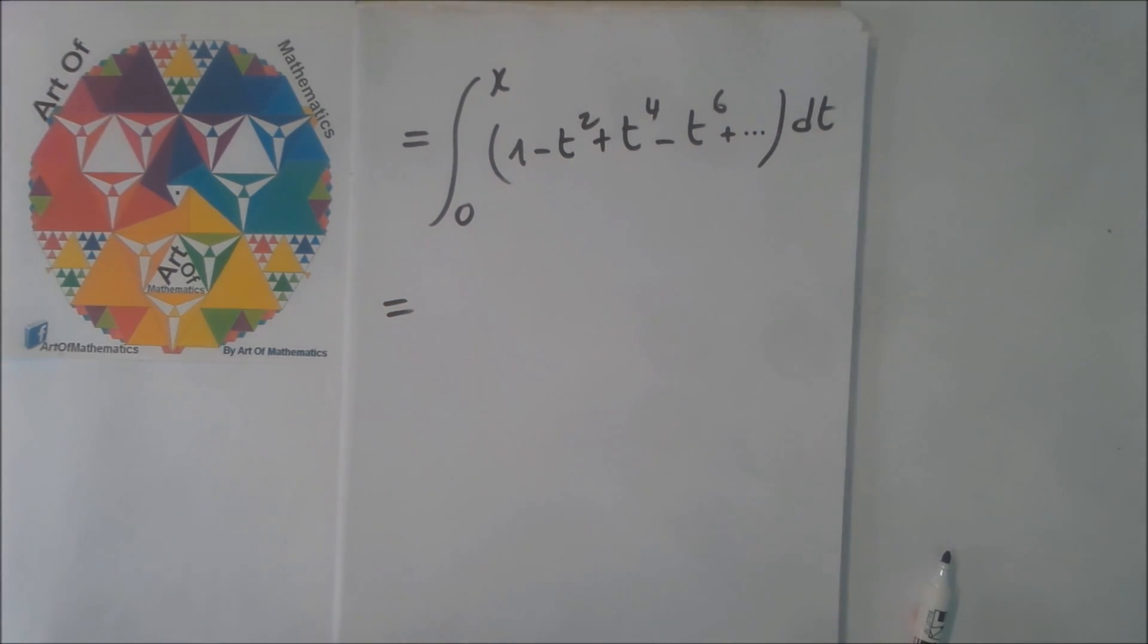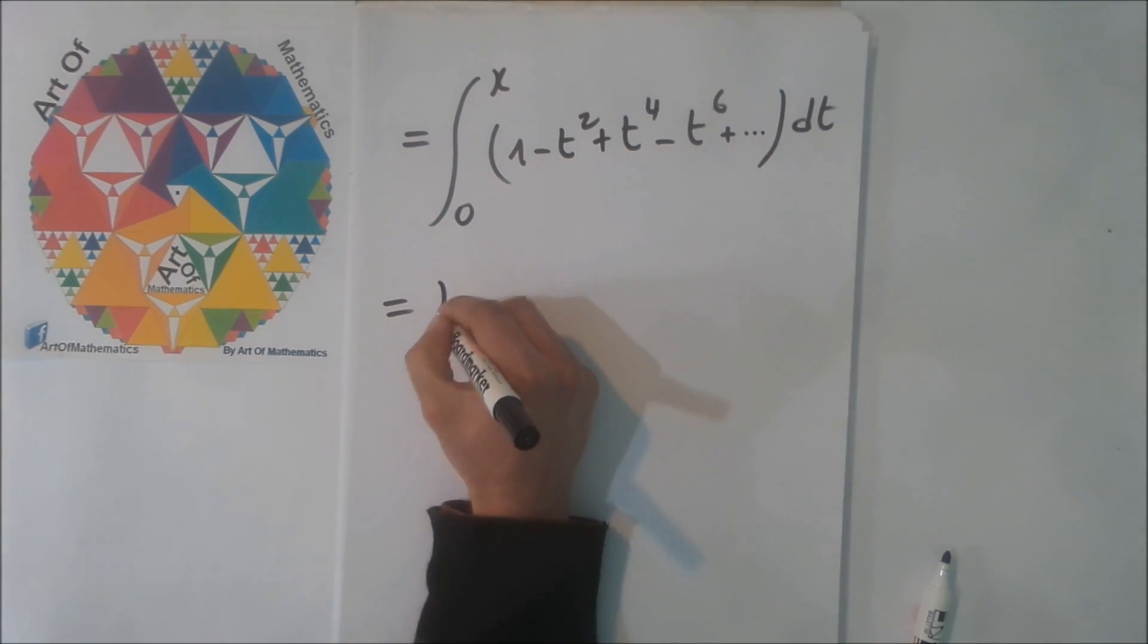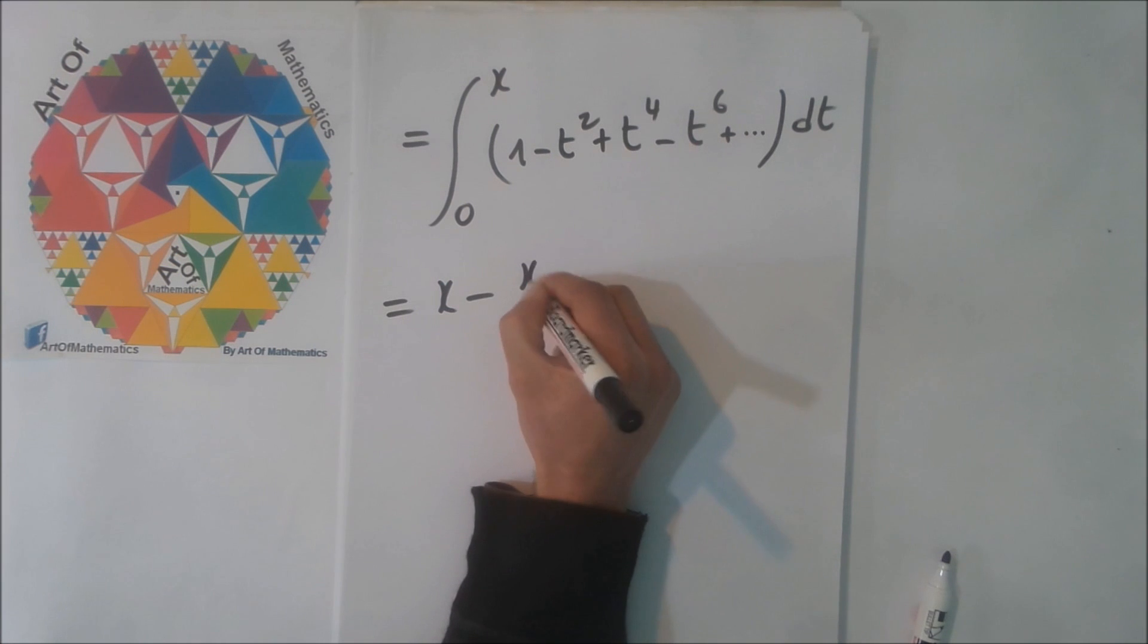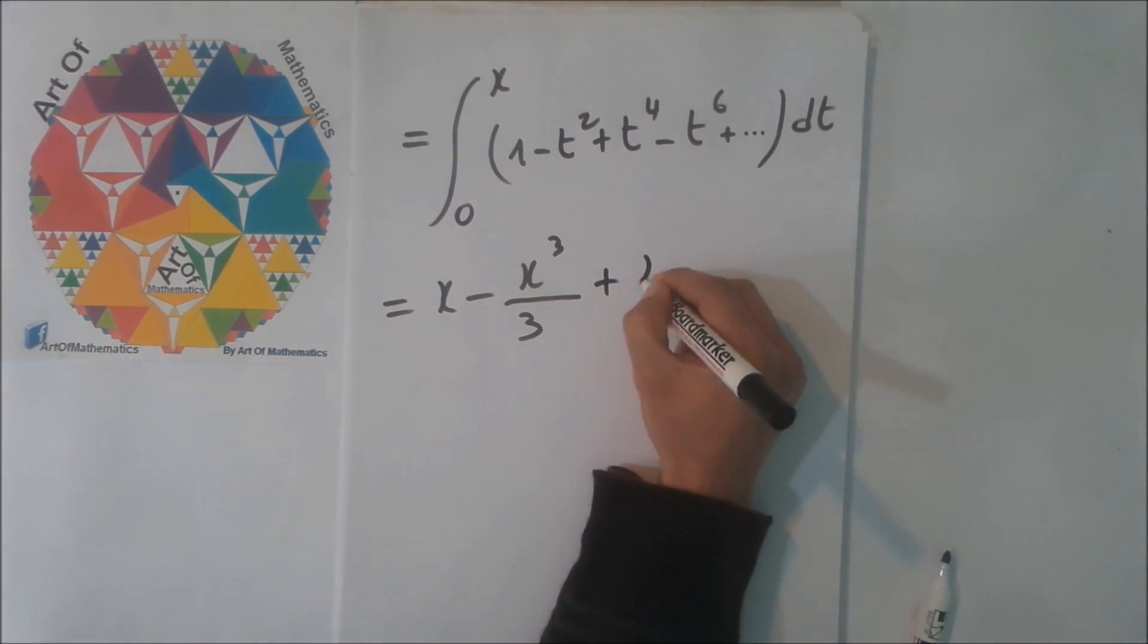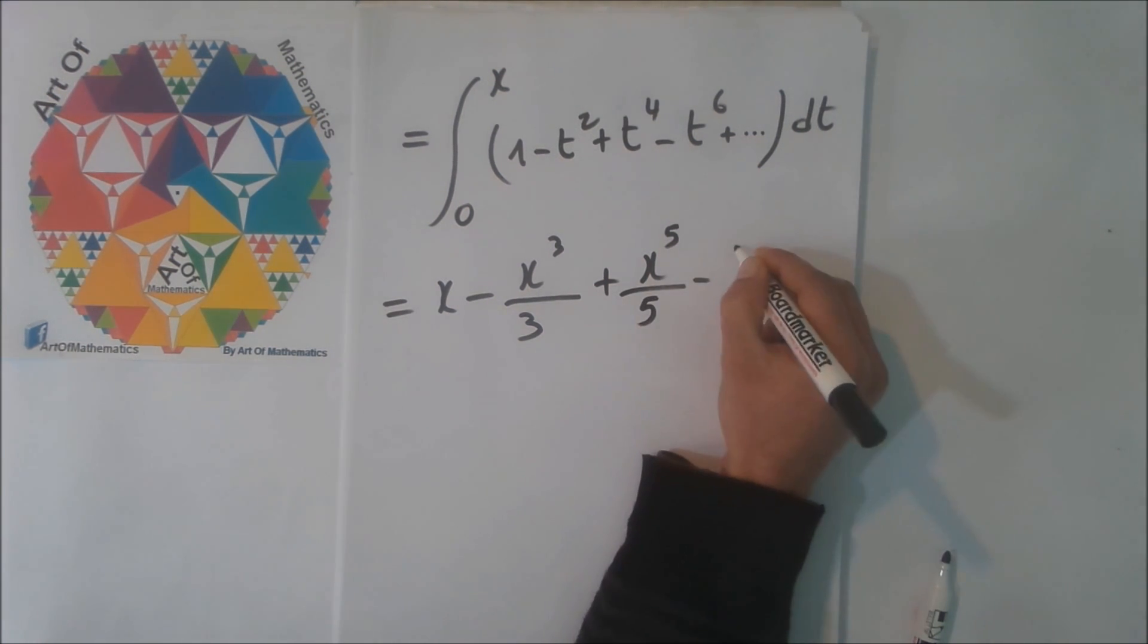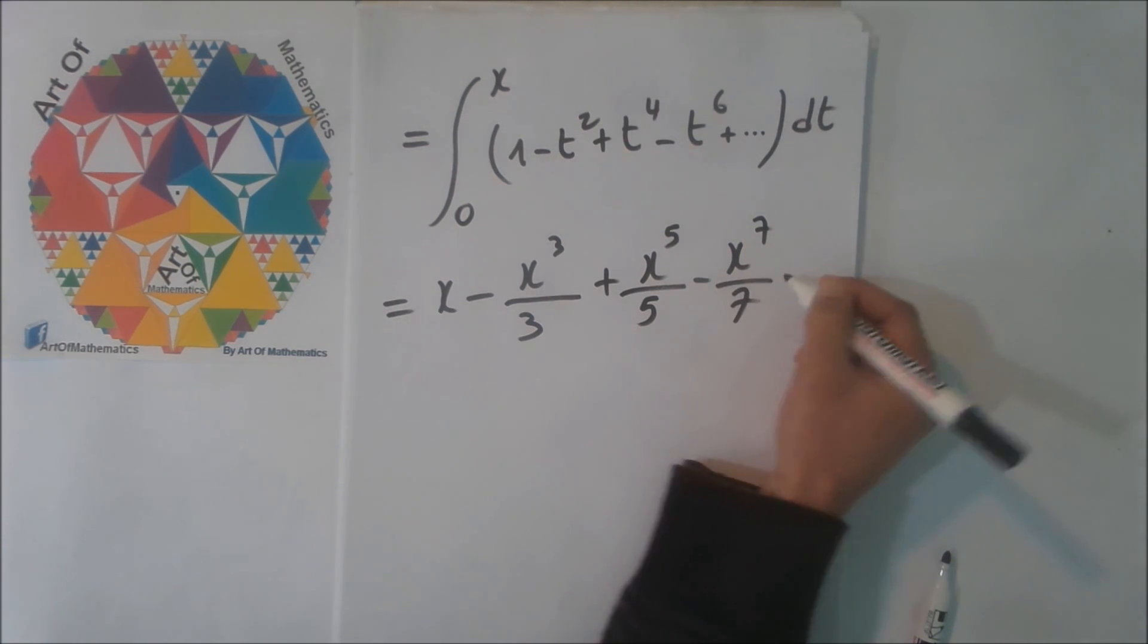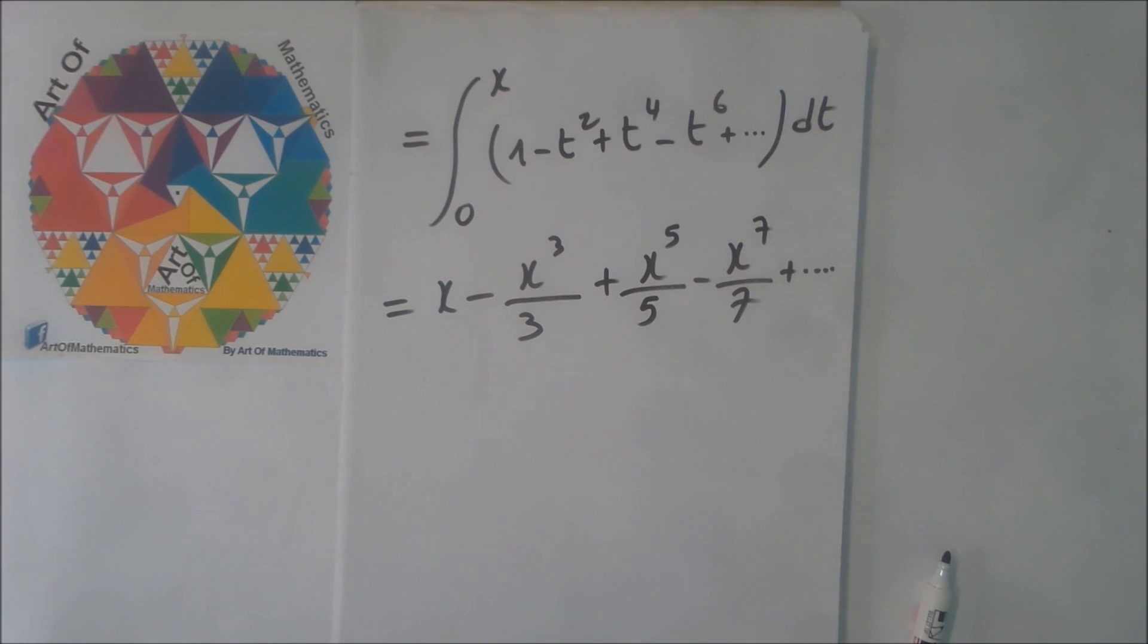Now we have the antiderivative of all this function. We get it equal to x plus x to the power 3 divided by 3, plus x to the power 5 divided by 5, minus x to the power 7 divided by 7, and so on.